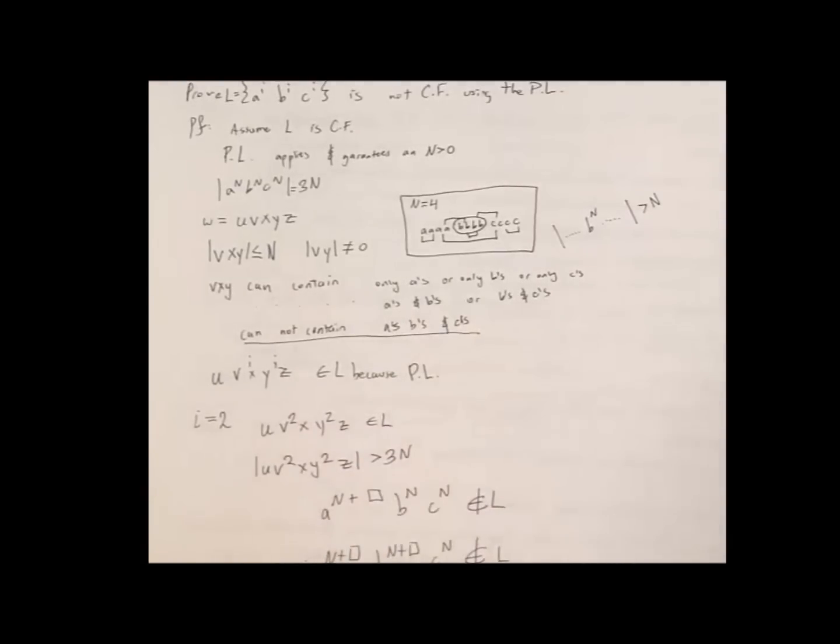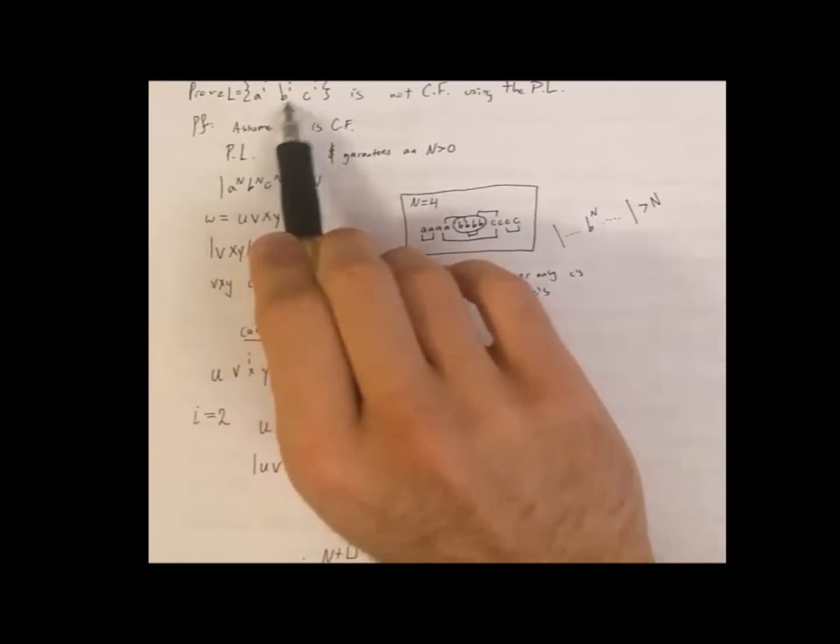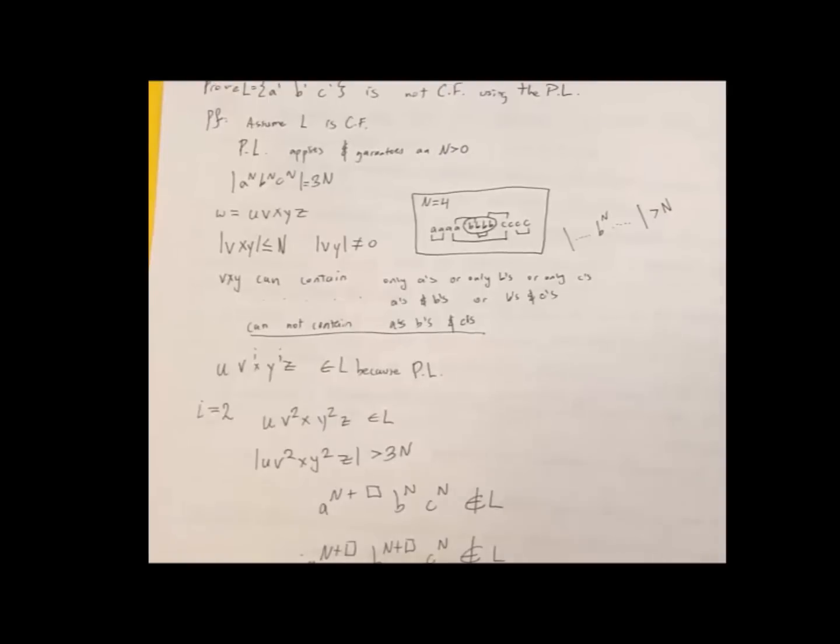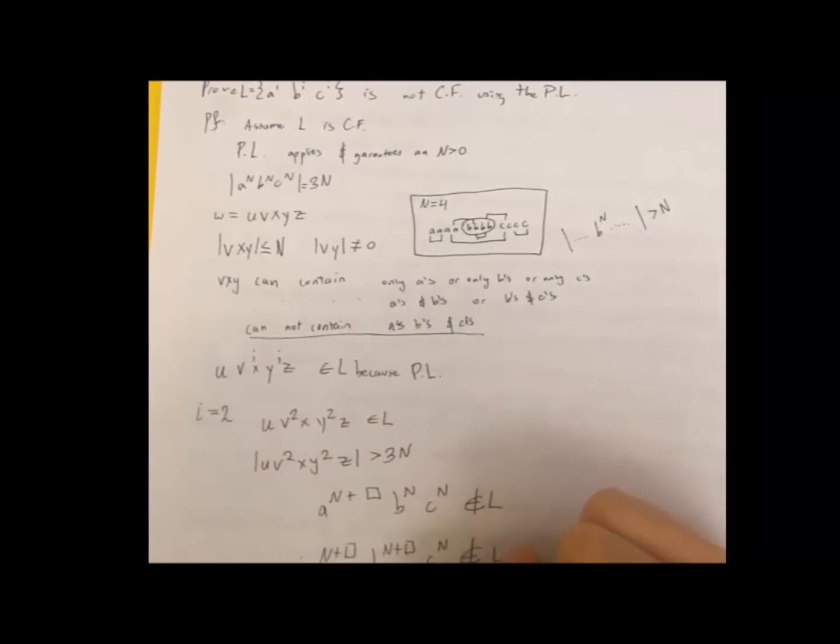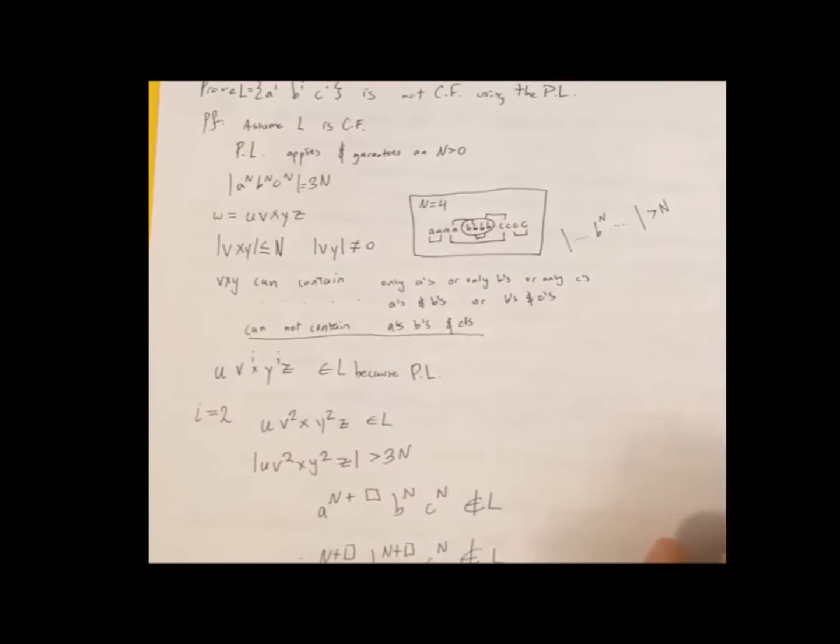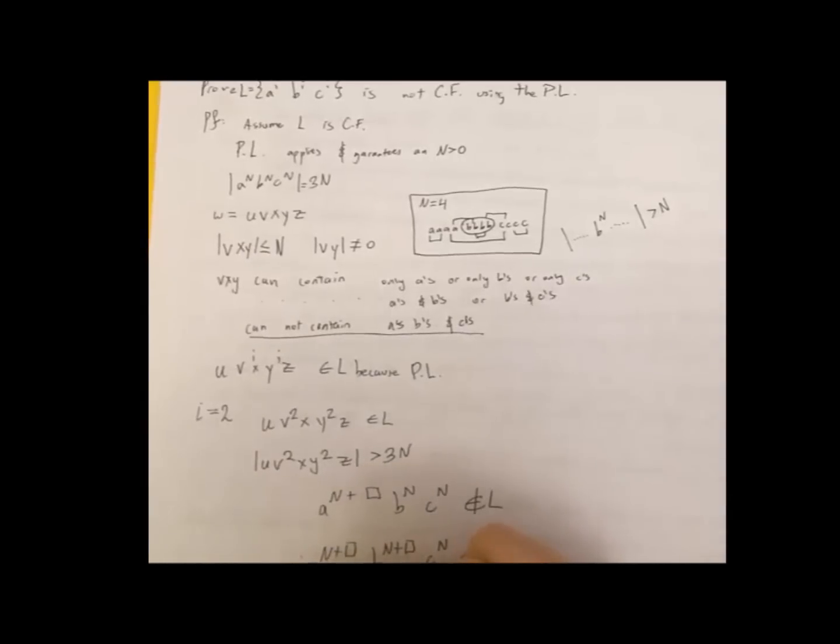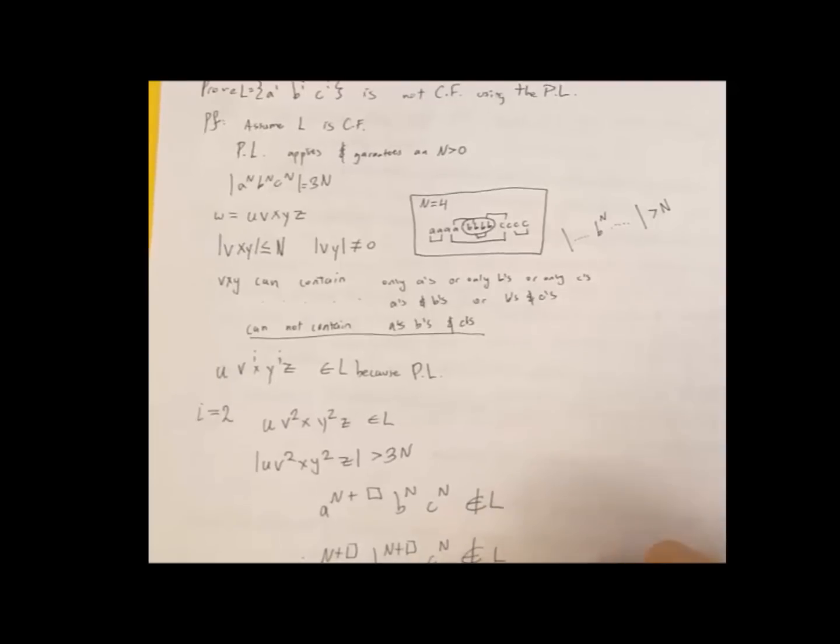So after we pump, this format is not the same. a^i b^i c^i. The number of a's does not match the number of b's does not match the number of c's. It leaves at least one letter n. Therefore, u v^2 x y^2 z does not exist in L. And this is a contradiction.